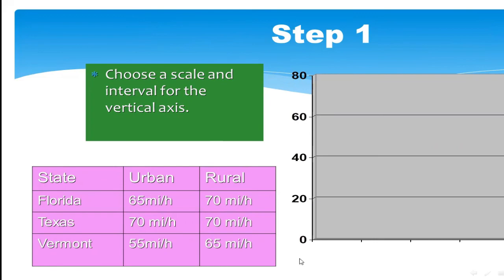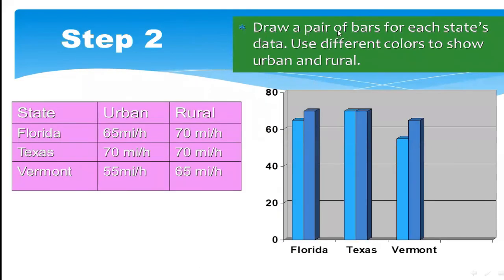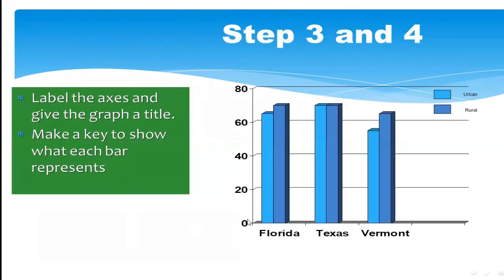Step one is complete. Step two: draw a pair of bars for each state. For urban, I draw light blue bars for Florida, Texas, and Vermont; and dark blue bars for rural. Florida: urban 65 and rural 70; Texas: urban 70 and rural 70, both equal; Vermont: urban 55, which falls just above 50 on the scale.